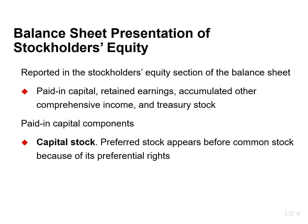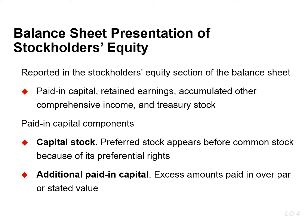Companies show preferred stock before common stock because of its preferential rights. They report information about the par value, shares authorized, shares issued, as well as shares outstanding for each class of stock. The second component is additional paid-in capital, which includes the excess of amounts paid in over par or stated value.